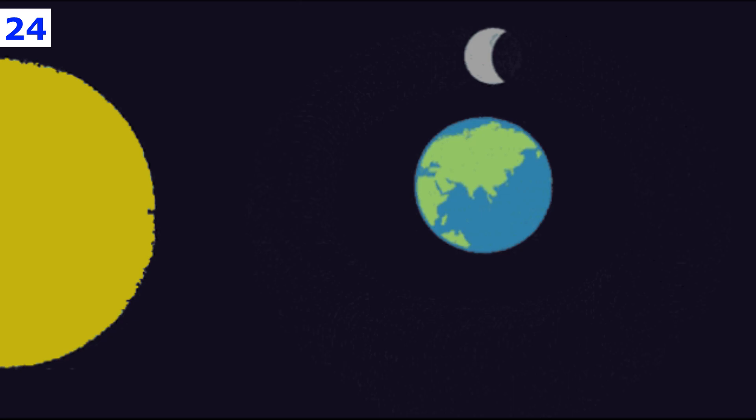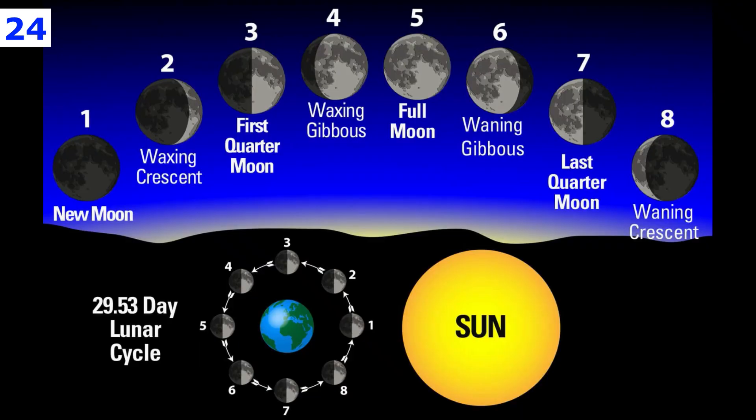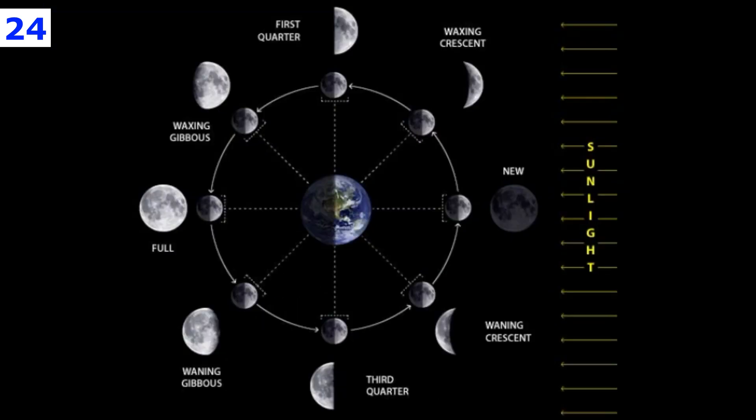There are a total of eight moon phases: new moon, waxing crescent, first quarter, waxing gibbous, full moon, waning gibbous, last quarter moon, and waning crescent. To understand all the moon phases in order, let's look at our diagram.